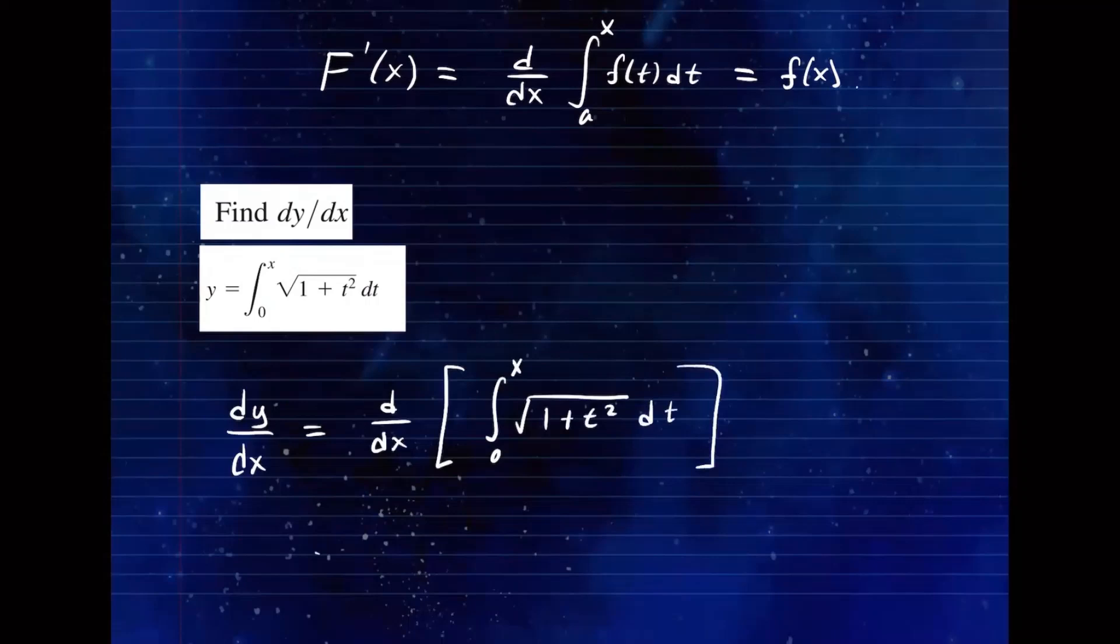So by using the theorem above, the right hand side will simply be the square root of 1 plus—where you see t, you'll replace it with this function, which is the upper limit of the integration. So I replaced that, I have simply t squared. That is our derivative of this function, which we're calling little f(x).